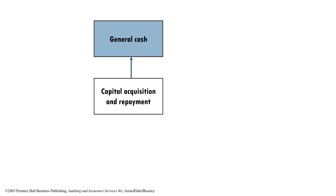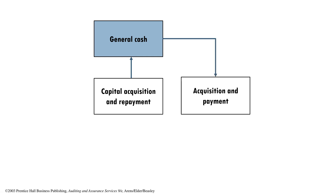The moment we have cash, the next question is: what will we do next? What is our favorite activity once we have cash? We will go shopping. Once the business has cash, the business will purchase materials, purchase inventory for resale, purchase supplies, pay off rent, utilities, and so on. Those things happen under the acquisition and payment cycle.